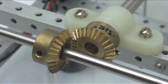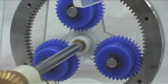The same worm gear shaft drives a pair of bronze miter gears, which drive a planetary gear assembly.